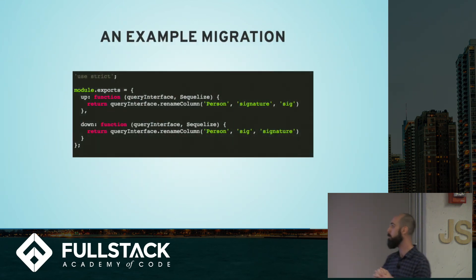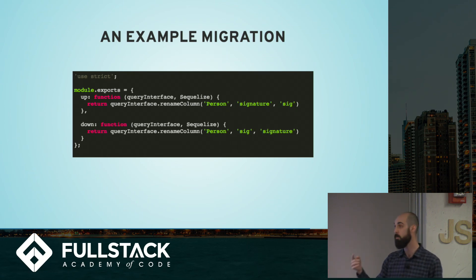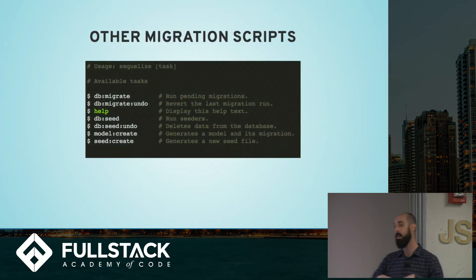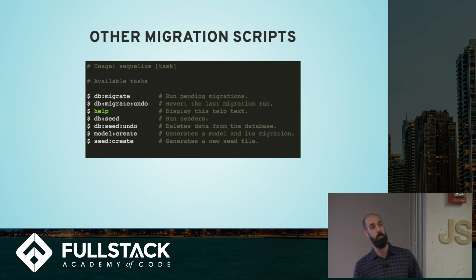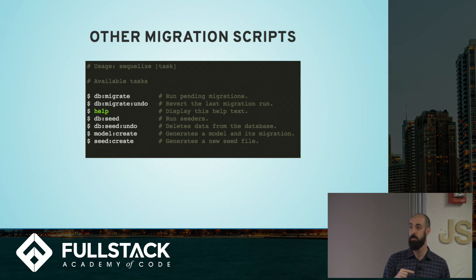It's important that your down function directly undoes what your up function does — in this case, we would call removeColumn, naming the table and the column we're trying to remove. Here's another example: if you'd like to rename a column, you could say you want to rename the column in your person table called 'signature' and rename it to 'sig'. Your down function would then take that 'sig' column in your person table and rename it back to 'signature'. The SQLize CLI also has a model:create command — you can define models right from the command line, describe their data types, and the CLI will go ahead and build your model file in your models directory for you.